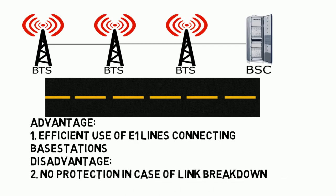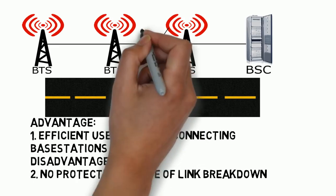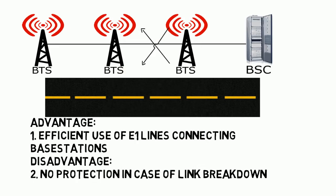In that respect, this configuration is very cost-effective as it requires fewer E1s. However, this configuration has a very evident disadvantage: there is no protection in case of a link breakdown. For example, if there is a link failure between two BTS stations, the other BTS stations on the left side would no longer be connected to the network.